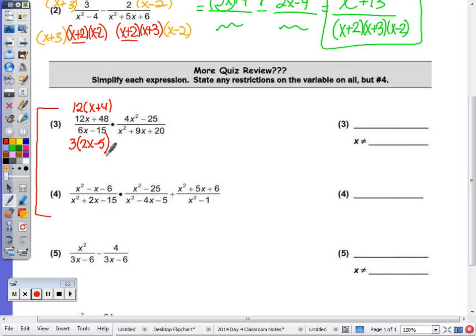No GCF, 4 doesn't go into 25. This is the difference of two perfect squares, 2x plus 5 times 2x minus 5. And then the factors of 20 that combine to 9 are x plus 5 and x plus 4.